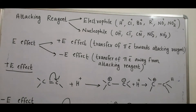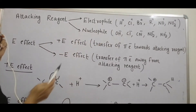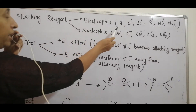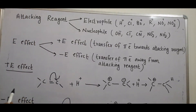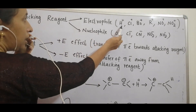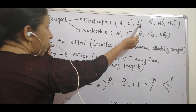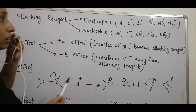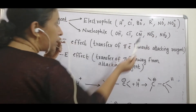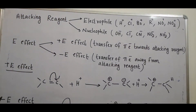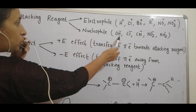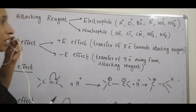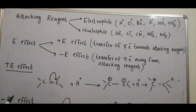The attacking reagent can be an electrophile or a nucleophile. Electrophiles are electron-loving and are positively charged or neutral — examples include H+, Cl+, Br+, R+ (alkyl group), NO+, and NO2+. Nucleophiles are nucleus-loving; they are negatively charged or neutral species — examples include OH−, Cl−, NO2−, and NH2− ions.